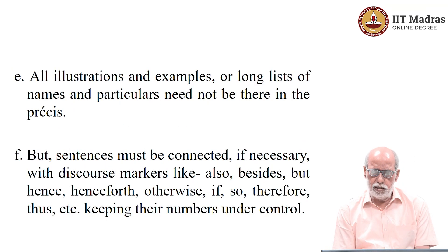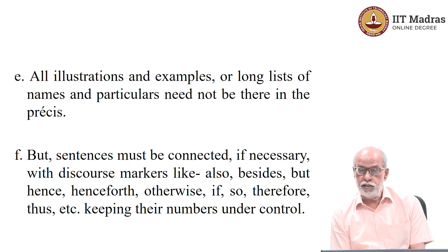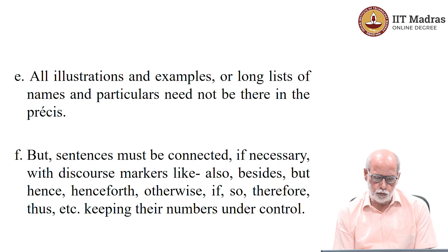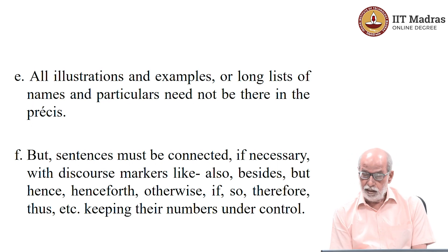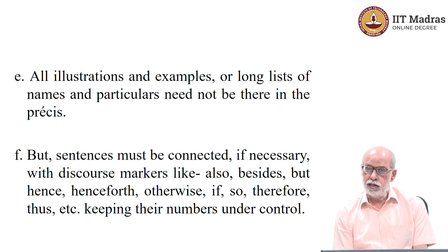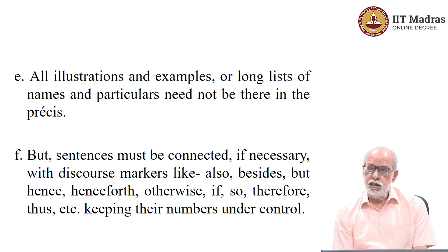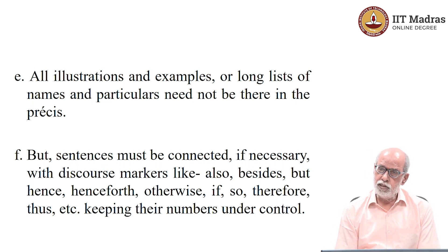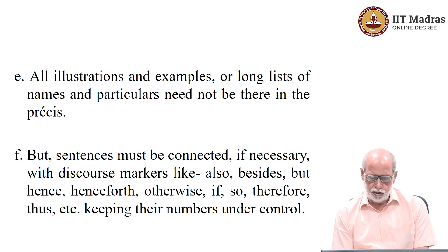All illustrations and examples, or long lists of names and particulars, need not be there in the same way. You can give fewer examples, you can make the list shorter, and you can achieve the target of saying the same thing in one third of the original words. But there is a constraint: these rewritten sentences must not hang aloof from one another like unconnected bullet points. They must make a coherent paragraph.